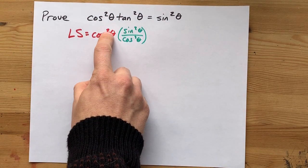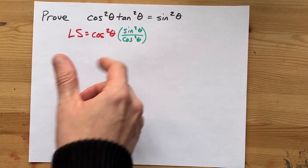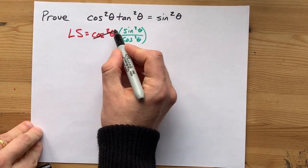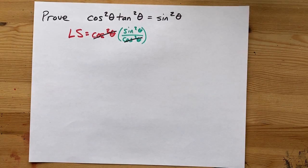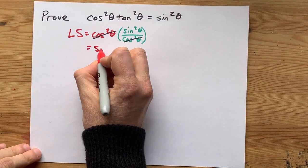Now you have cos squared times something divided by cos squared. Those cancel each other out, and you're left with just sine squared theta.